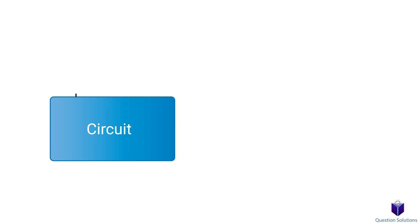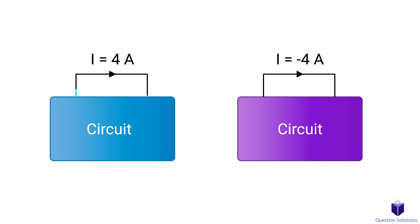Consider a wire with an arrow: this tells us that at any point in the wire there are four coulombs of charge passing from left to right each second. In another circuit, the arrow still points in the same direction but the charge is negative four amps, which tells us that four coulombs of charge pass from right to left each second. So when we represent current, we need to show both the magnitude and the direction.